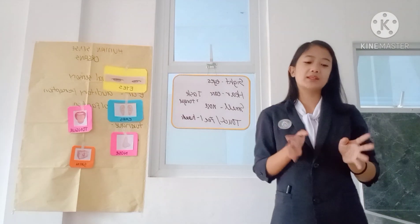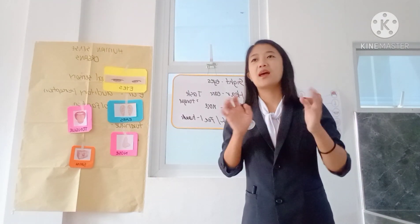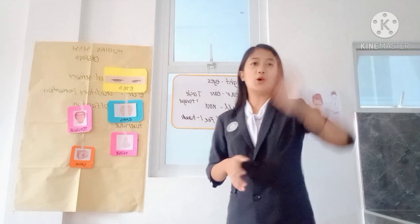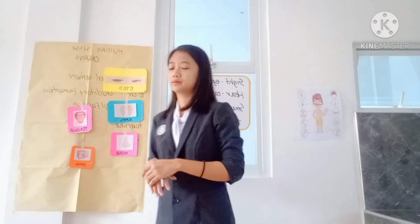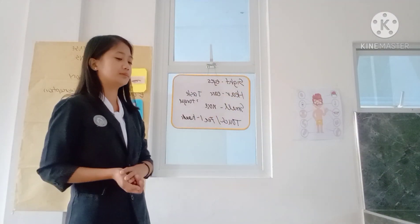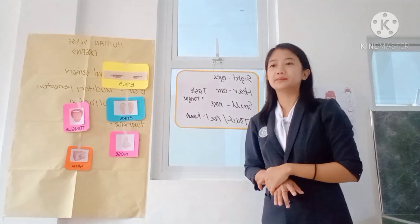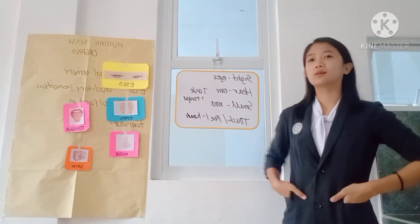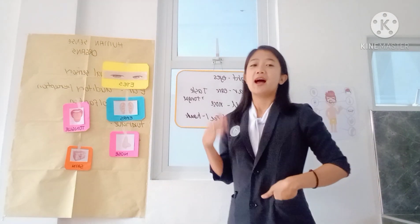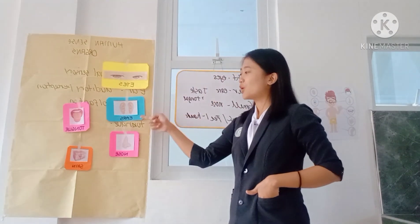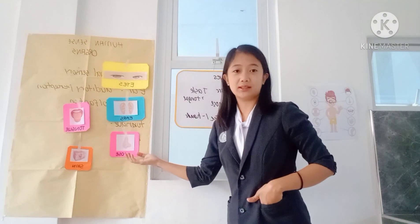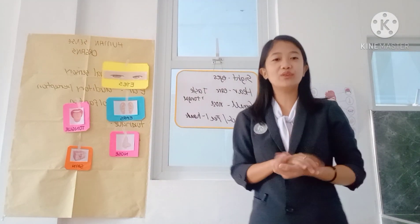Class, give me some examples of human sensory organs and their function. Yes, Nicole. Agatha. Yes, Marika. Lastly, Joshua. Correct. Eyes help us to see. Nose helps us to smell. Ear helps us to hear. Tongue helps us to taste. And lastly, the skin or the hands help us to touch or feel things.